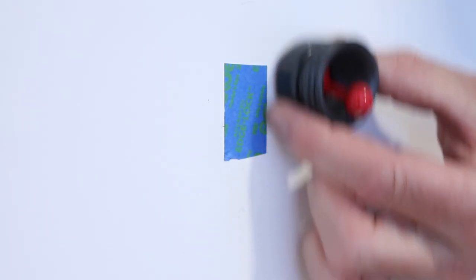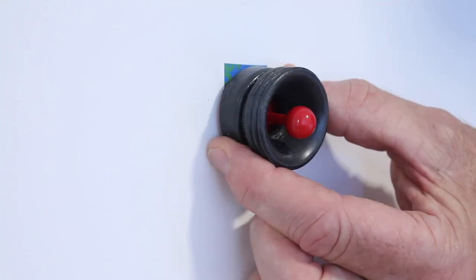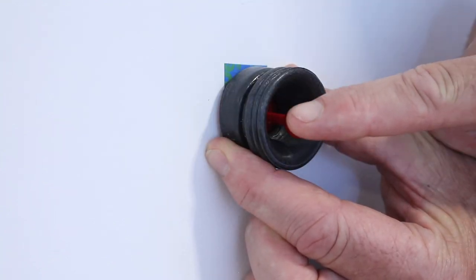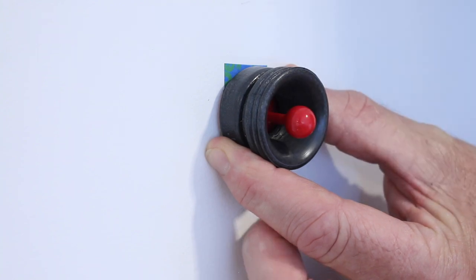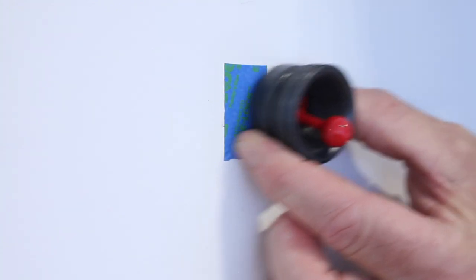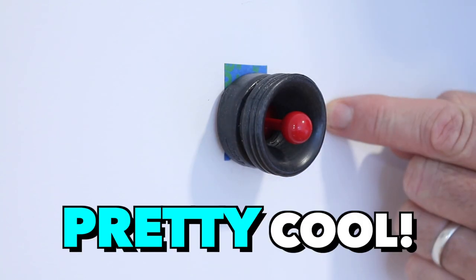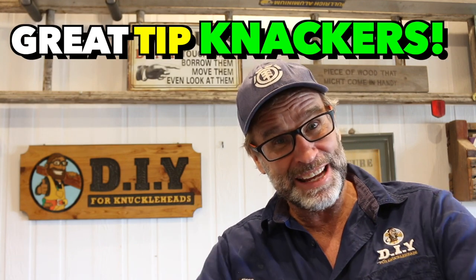Now the Stud Pop uses the same principle of magnetic attraction, but the difference is, when it finds a metal fastener, the indicator moves and clicks into position. Now that, that's pretty cool. Now I reckon that little ripper deserves a great tip knackers.